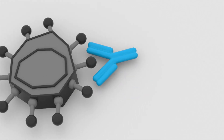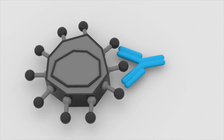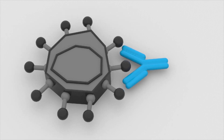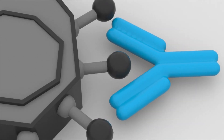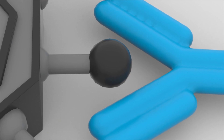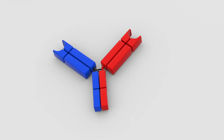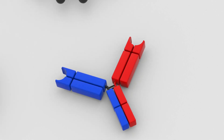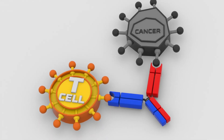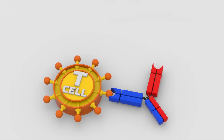In earlier videos in this series, we described the concept of immunotherapy and how bispecific antibodies work. Like monoclonal antibodies, bispecific antibodies are able to attach to a myeloma cell by something on its surface, an antigen. But they're different in that they have a second arm that can engage a local immune cell to activate it to destroy the myeloma cell.